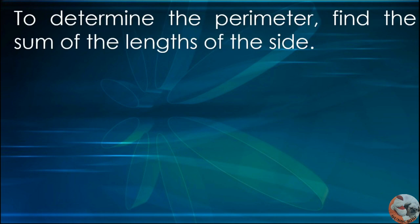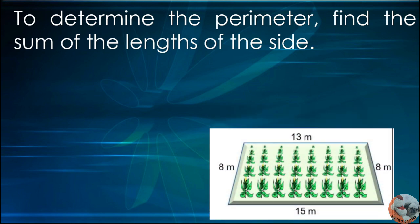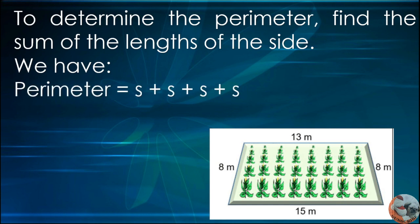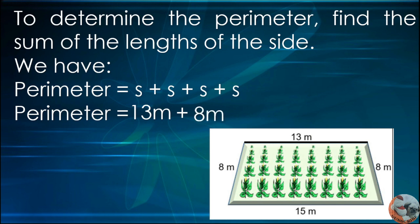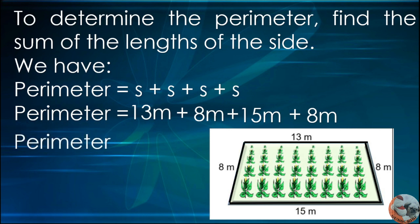Perimeter. To determine the perimeter, find the sum of the lengths of the sides. We have perimeter is equal to S plus S plus S plus S. S is the measurement of the sides. So perimeter equals 13 meters plus 8 meters plus 15 meters plus 8 meters. So the perimeter is equal to 44 meters.